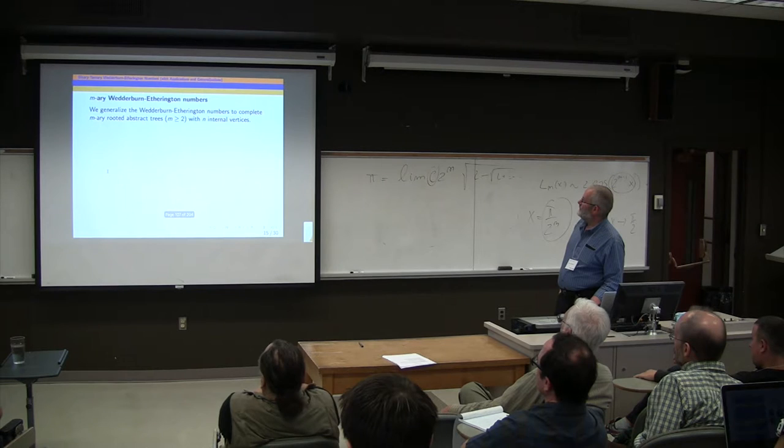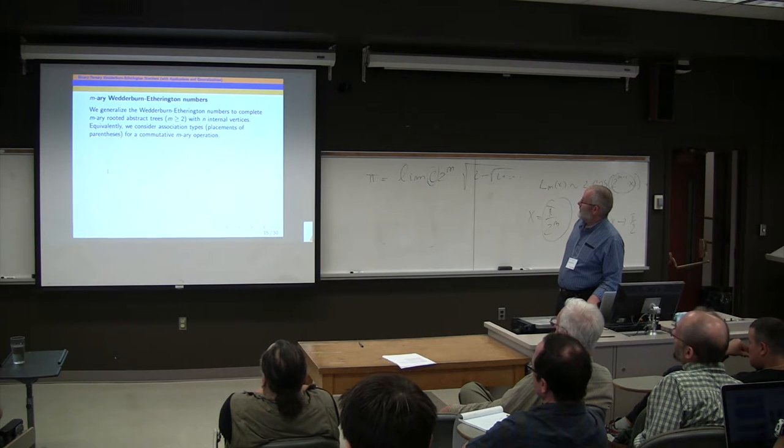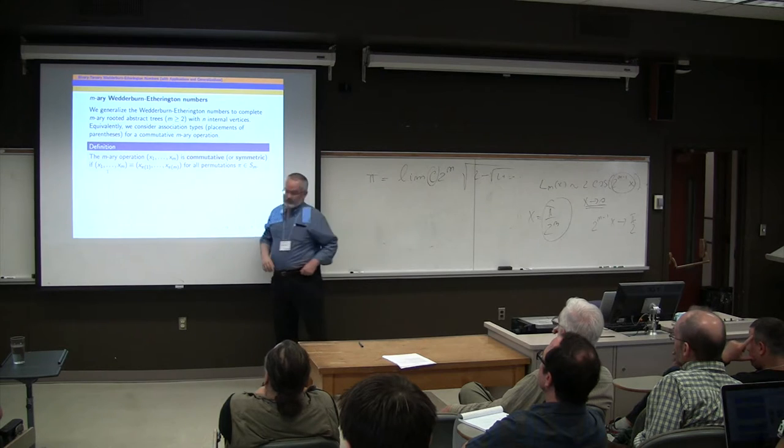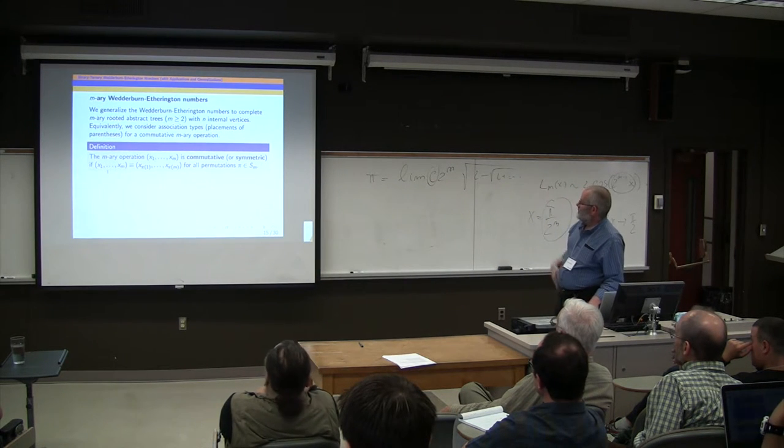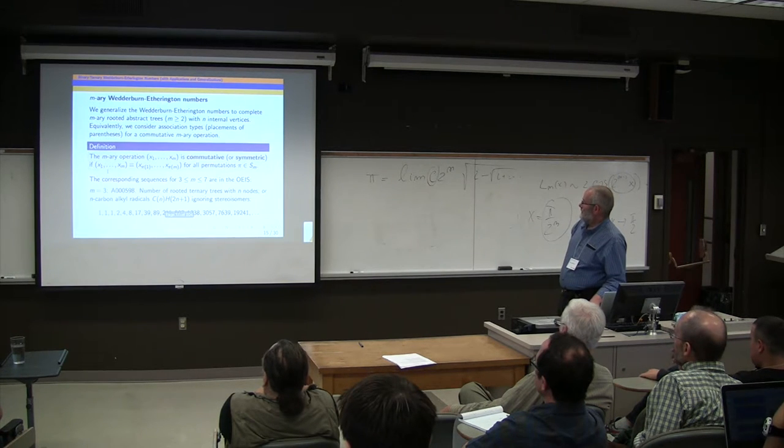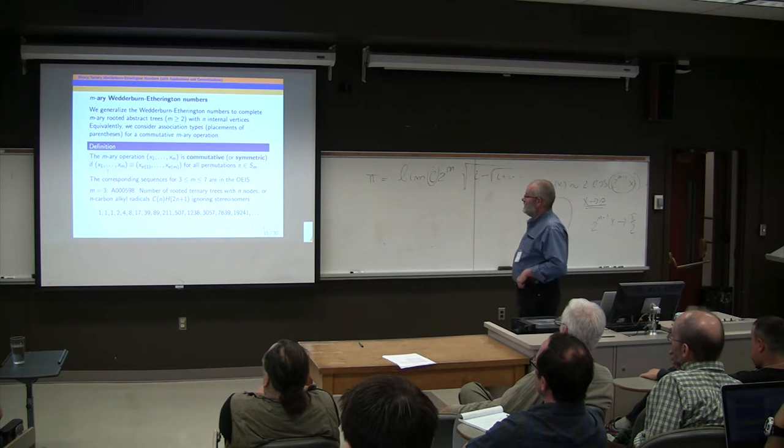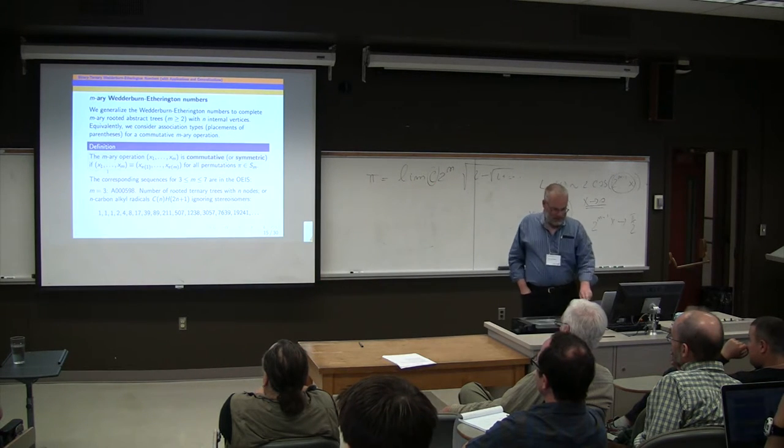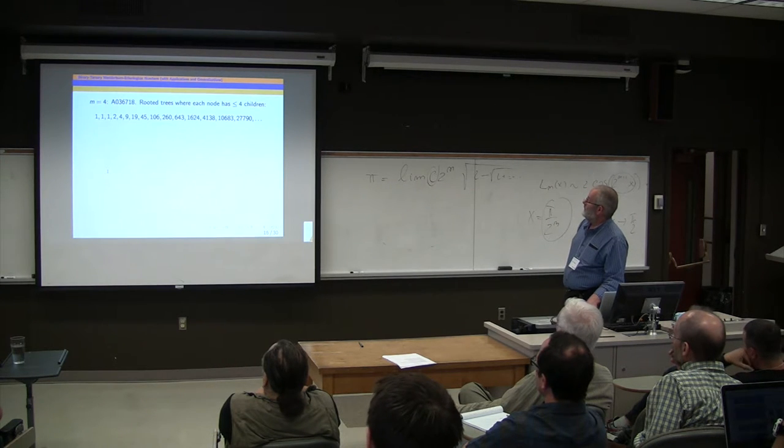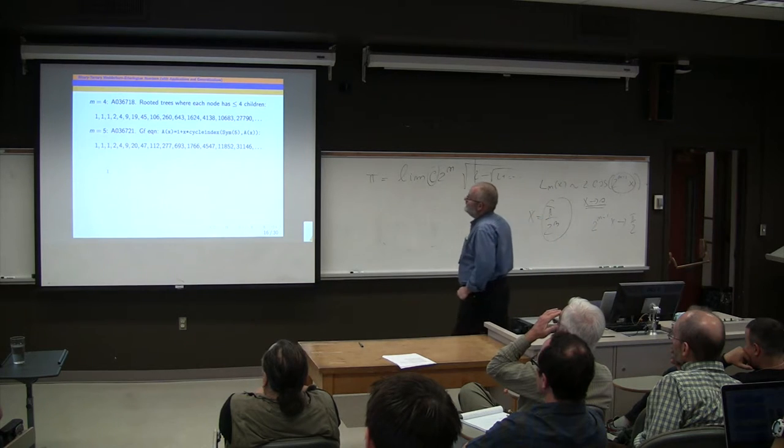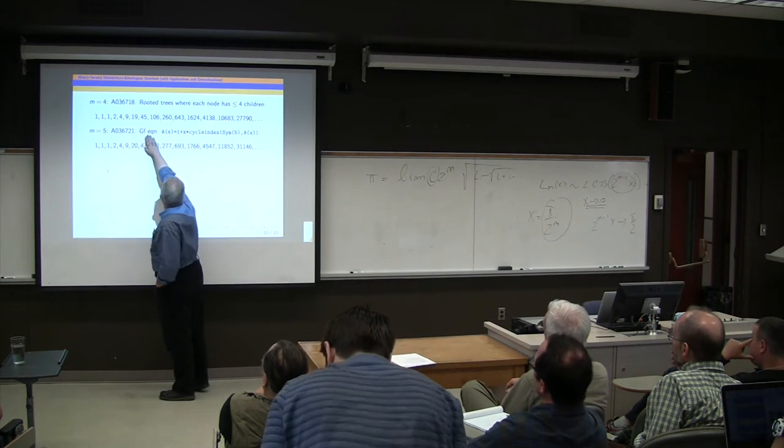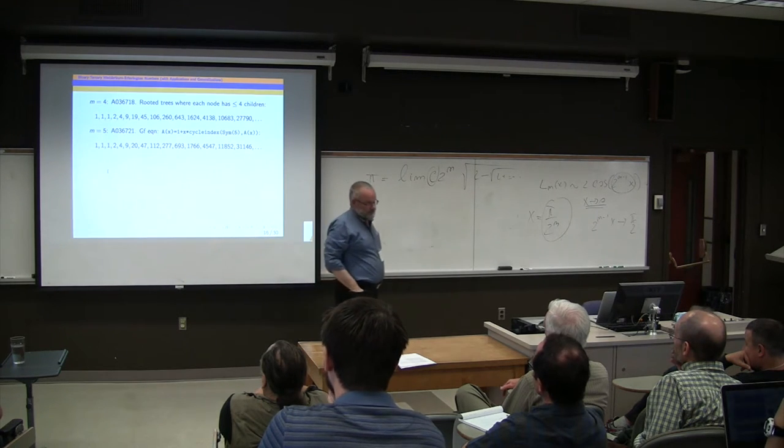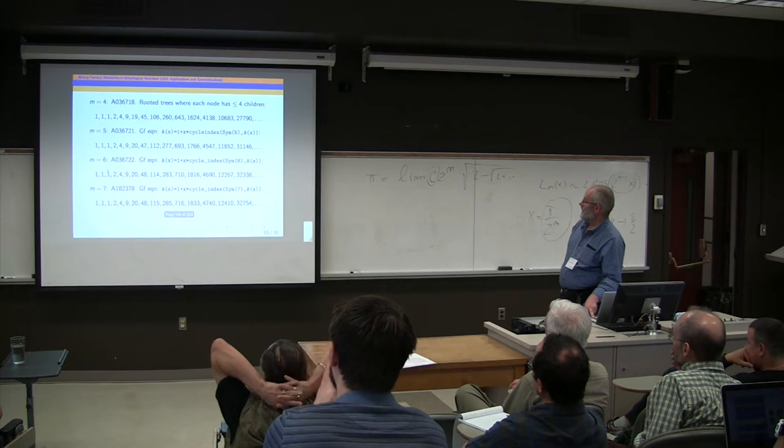Okay, well, again, we can generalize this to an m-ary operation. I believe n here should be the number of leaves. So commutative or symmetric operation just means invariant under all permutations. These sequences are from m equals three to seven. They're in the encyclopedia. This one had an interesting description, some chemistry that I know nothing about. For m equals four, you get that. For m equals five, you get these numbers. And the OEIS also pointed out that the generating function satisfies this interesting equation involving a cycle index over the symmetric group. And that is also true for m equals six and for m equals seven.